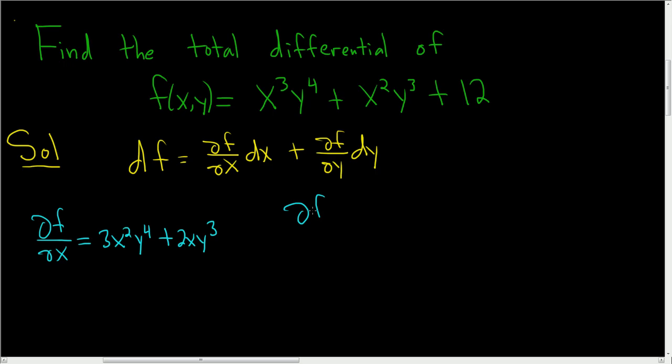Now let's find ∂f/∂y. This time we hold x constant, so we take the derivative of y to the fourth, so we get 4x³y³. And again, treating x as constant, we hold the x² fixed, so we get 3x²y².